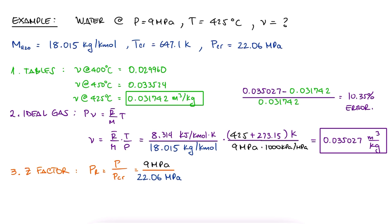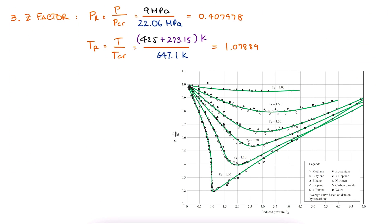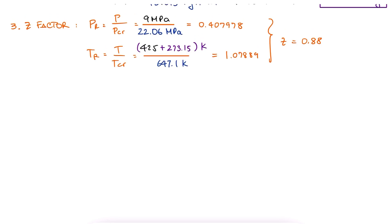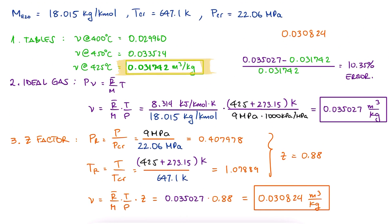And finally, if we calculate the reduced pressure and the reduced temperature, we can go to our Z chart and use the PR value and the TR value to say that Z is roughly 0.88. This results in a specific volume of 0.030824, which is not quite the value from the tables, but at least much closer than without using the compressibility factor Z.